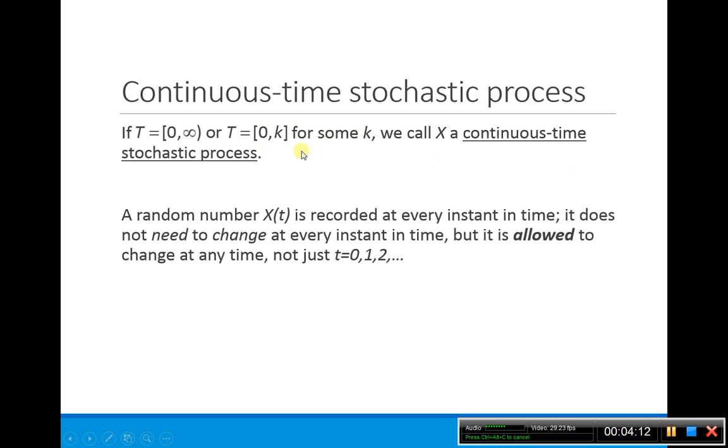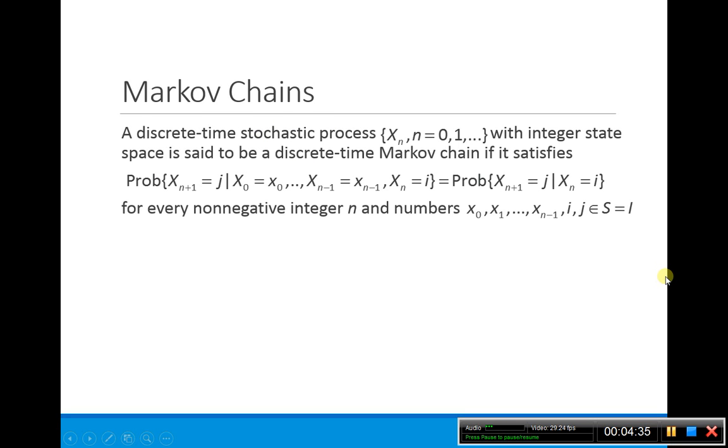In each of these cases, we're allowing X of T to be recorded at every instant in time. It doesn't mean it needs to change at every instant in time, but it's allowed to change at every instant in time in our index set T, where T is no longer just the counting numbers 0, 1, 2, 3, but it's actually an interval.